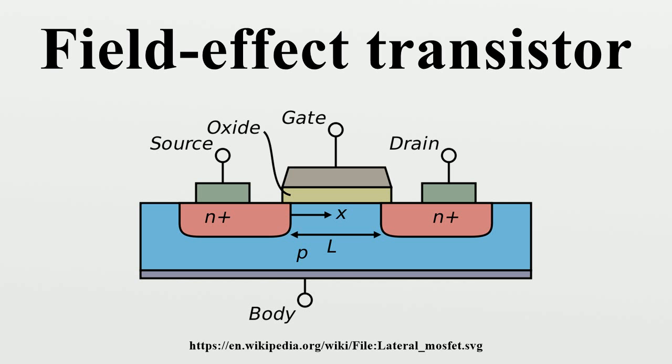The MESFET substitutes the PN junction of the JFET with a Schottky barrier and is used in GaAs and other III-V semiconductor materials.